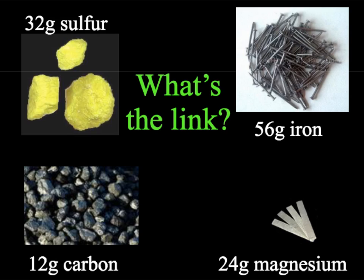Here we have four different elements with different masses: 32 grams of sulfur, 56 grams of iron, 24 grams of magnesium, and 12 grams of carbon. If you look at the periodic table, you'll see that these values are the values for the molecular mass. This means that we have one mole of each of these. So we can say that the molar mass of a substance is another way of saying the mass of one mole.